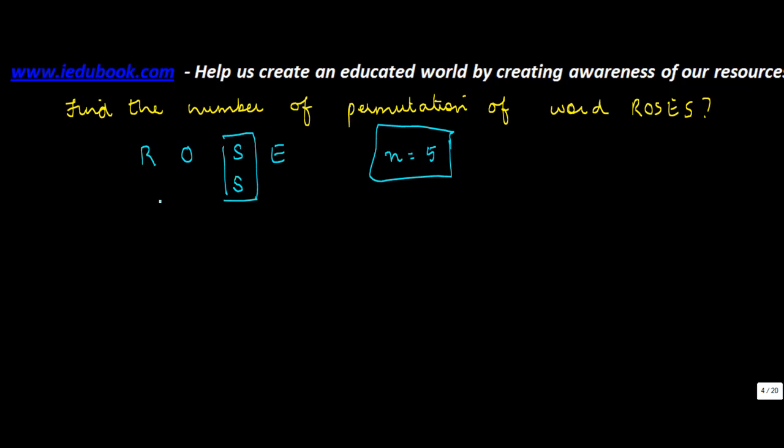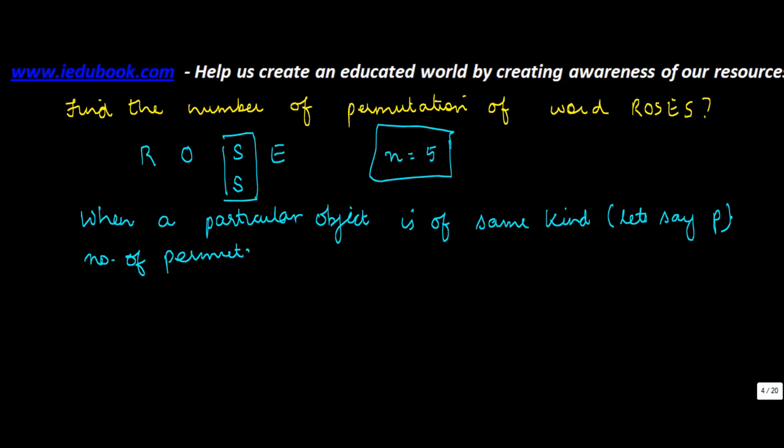Now there is a theorem, a probability theorem, which says that when a particular object is of same kind, let's say p, the number of permutations is equal to factorial n upon factorial p.